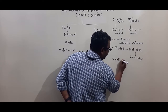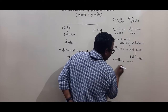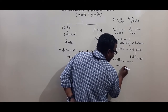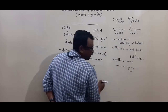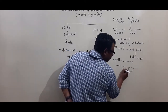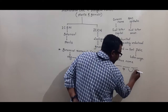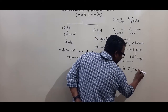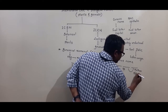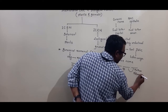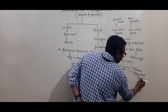The last rule is that whenever the author's name — whoever gave the name to that organism — is mentioned, it should appear after the specific epithet and should be written in abbreviated form.